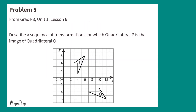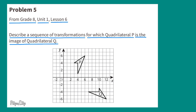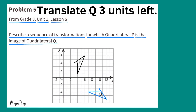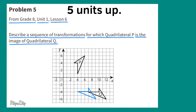Problem number five, from 8th grade, Unit 1, Lesson 6. Describe a sequence of transformations for which quadrilateral P is the image of quadrilateral Q. Translate Q 3 units left and 5 units up.